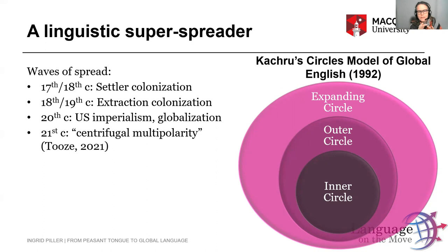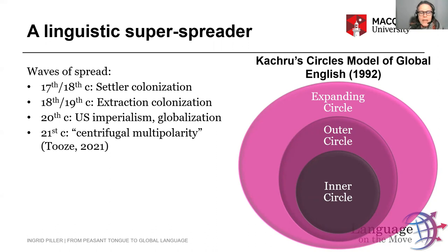The model is a bit dated now, but it certainly gives us an idea of how to think about different spreads or different types of English, how English is used in different places. It also maps quite neatly onto the waves of spread, because English, as I said, didn't spread simply by population increase — it spread significantly through colonization. We can actually distinguish three waves in the spread of English that partly map onto the circles that Kachru identified.